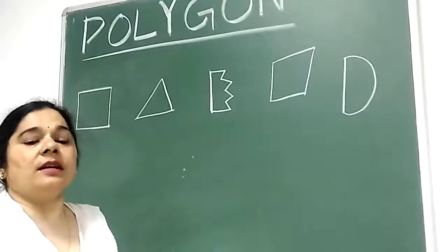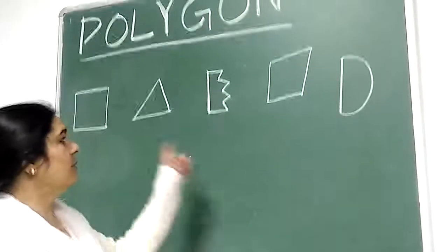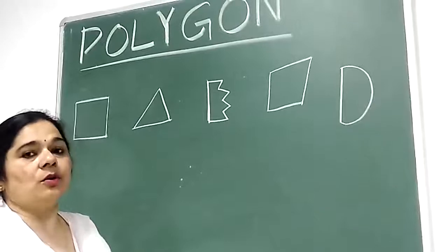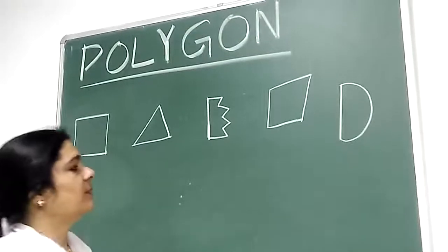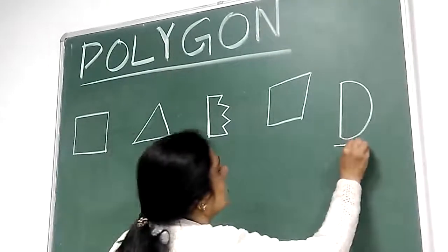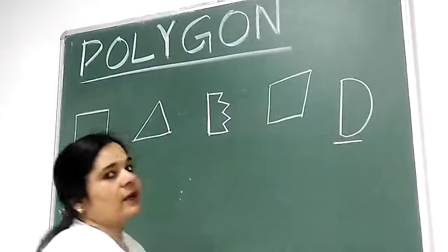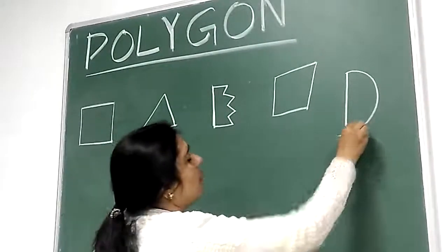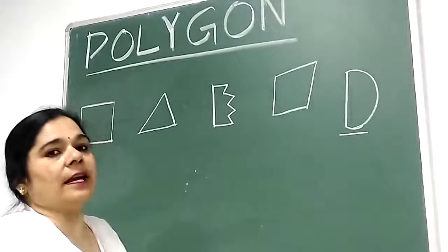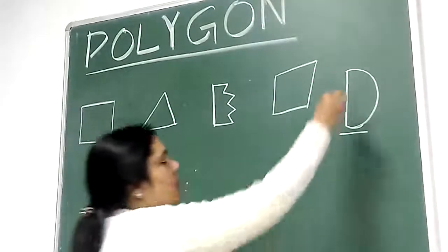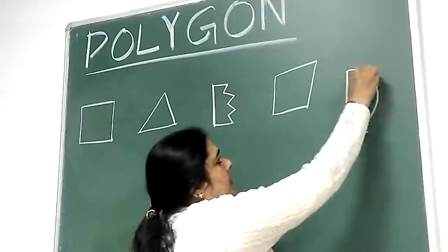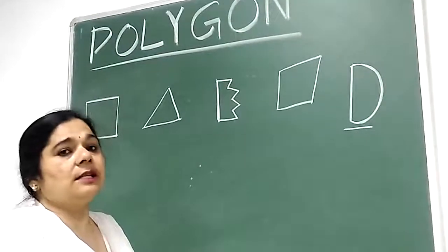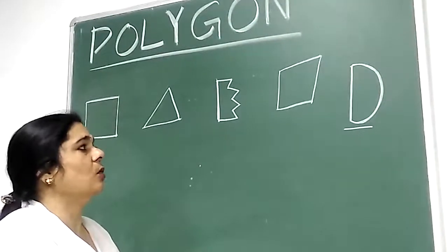Now, if I'll ask you, which is the odd one out? So, you can easily say this figure is the odd one out because this is made up of a curved line or curved boundary. This figure is made up of a curved boundary, so this is the odd one out.